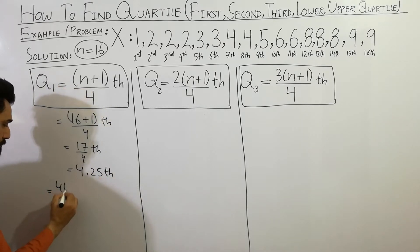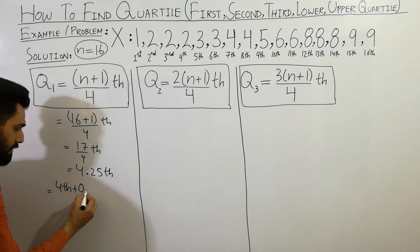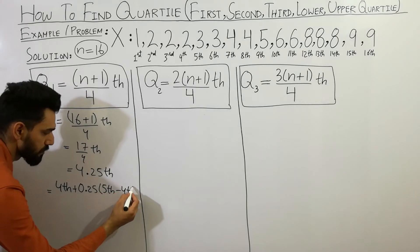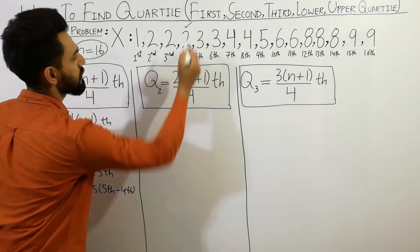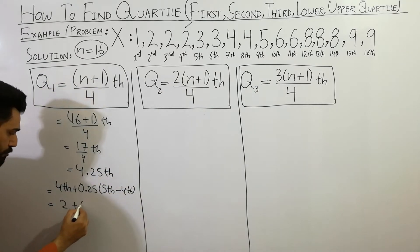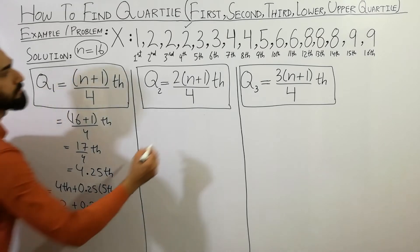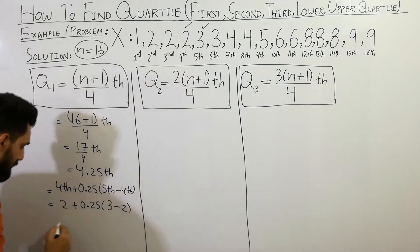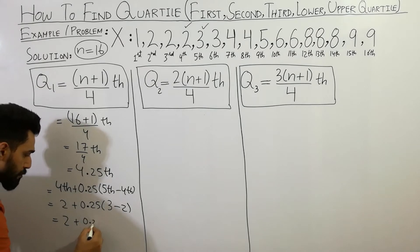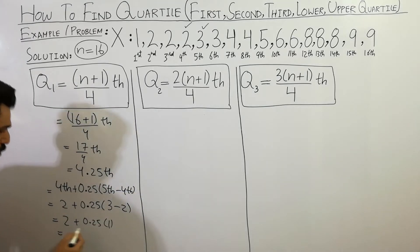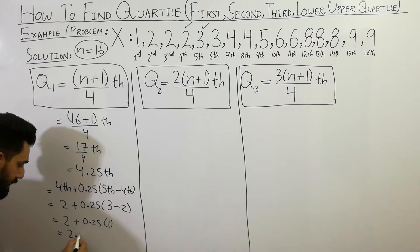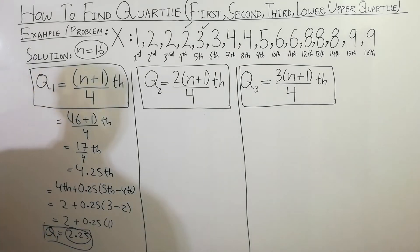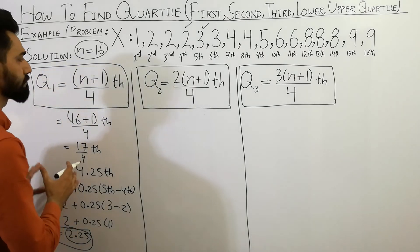You can write here: 4th term plus 0.25 bracket (5th term minus 4th term). So the 4th term is given here as 2, and the 5th term is given here as 3. So: 2 plus 0.25 times (3 minus 2) equals 2 plus 0.25, which gives Q1 = 2.25. I hope you are clear on how to calculate the first quartile.